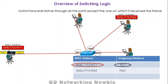This was a brief overview of how a switch works and how switching logic operates. A switch is a really important network device needed to establish a computer network. I hope you got some idea about switching logic. If you have any questions, write in the comments. And for you, a question: what is the difference between a hub and a switch? I'll be waiting for your comments on that.